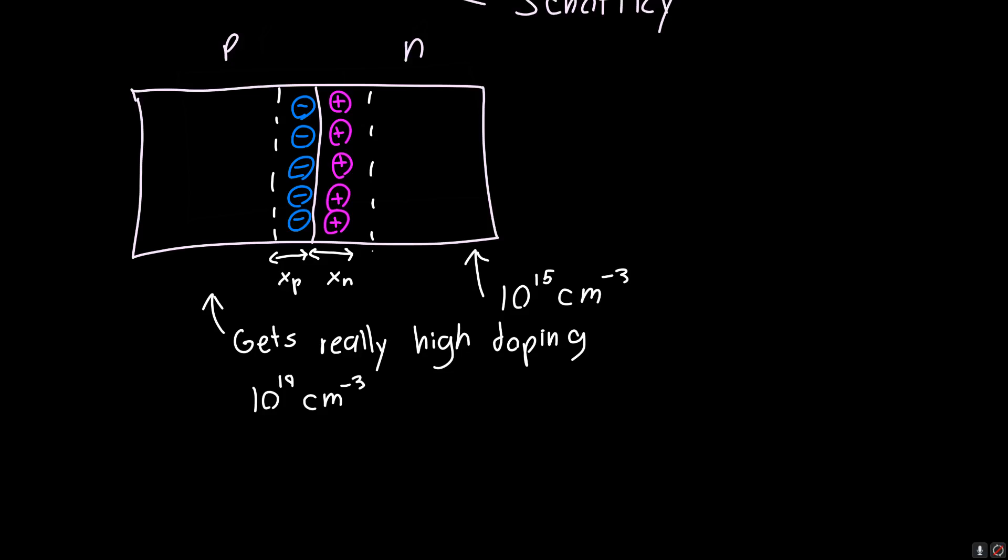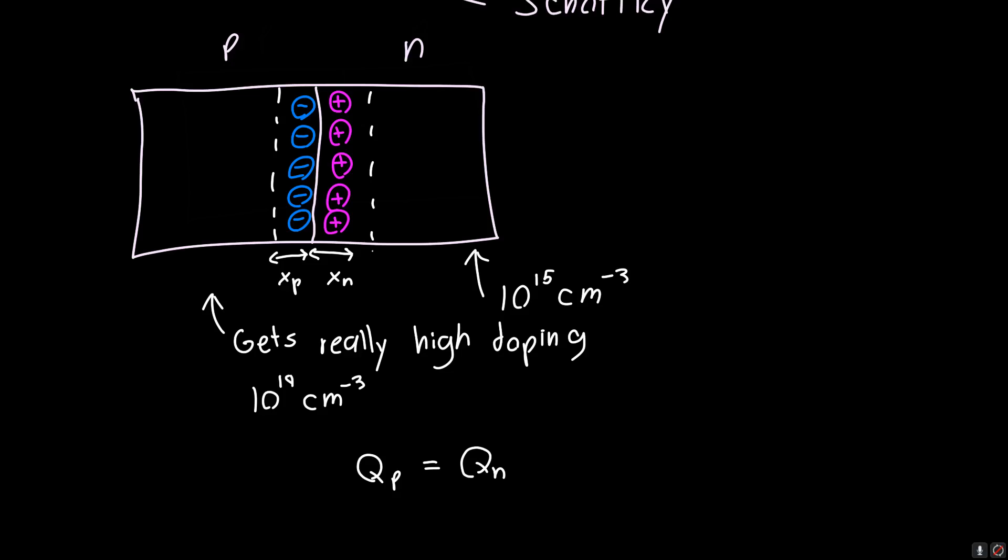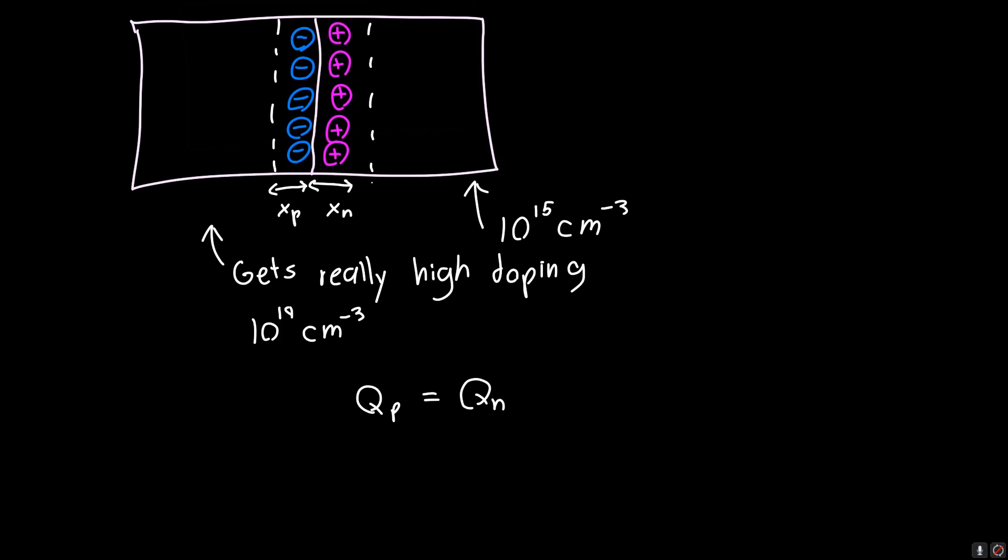If we know that the charge on each side must be equal, so the charge in the depletion region on the P side must equal the charge on the N side, that's just charge neutrality because the semiconductor overall is neutral.